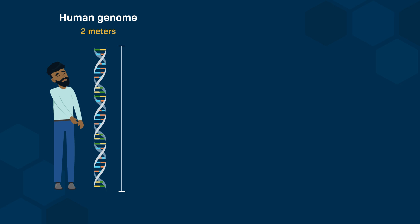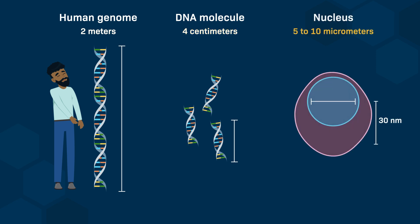We know the total length of the human genome is about 200 cm, and on average, the length of a DNA molecule found in a chromosome is about 4 cm, while the diameter of the nucleus is only about 5-10 micrometers.